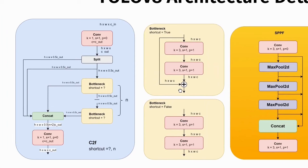Next is the C2F block. This block contains a convolutional block, and the resulting feature maps will be split. One goes to the bottleneck block, whereas the other goes directly into the concat block. In the C2F block, we can have many bottleneck blocks. At the end, there is another convolutional block. The bottleneck itself is a sequence of convolutional blocks with a shortcut. If you are familiar with the ResNet block, the bottleneck block is pretty similar. The difference is that there is a bottleneck without a shortcut.